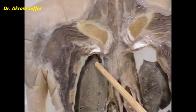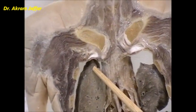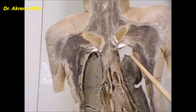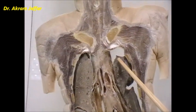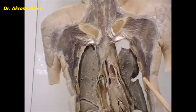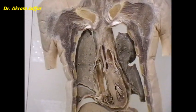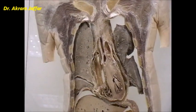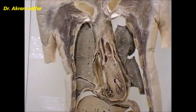Normally, the apex of the lung extends into the base of the neck. But here it is not very well shown because of the shrinkage that takes place during the plastination.